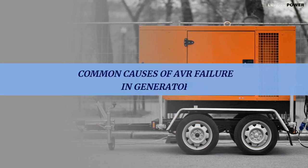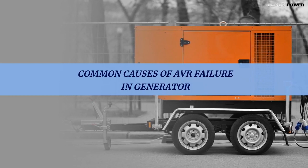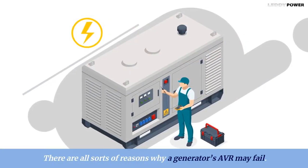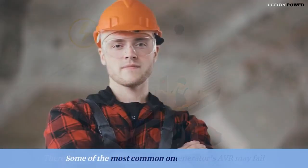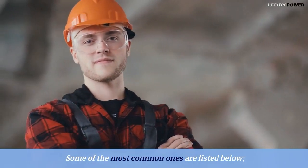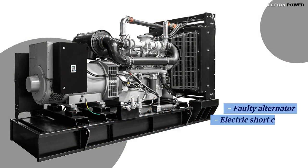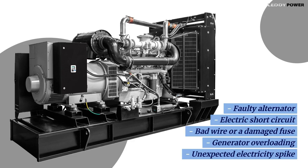Common causes of AVR failure in a generator. There are all sorts of reasons why a generator's AVR may fail. Some of the most common ones are listed below: faulty alternator, electric short-circuit, bad wire or a damaged fuse, generator overloading, and unexpected electricity spike.